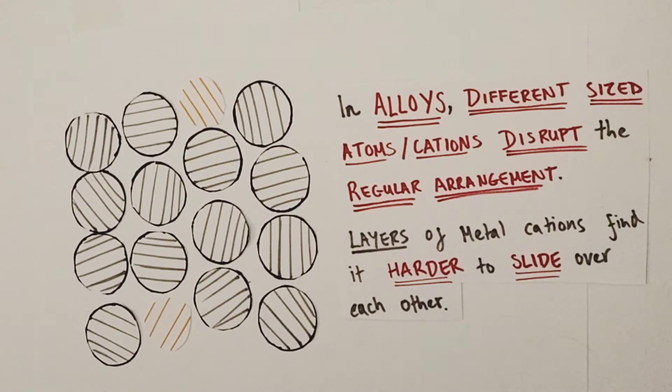This is still disrupting the regular arrangement of those metal cations in the structure, and the layers of metal cations will again find it harder to slide over each other due to that disruptive nature of the different size atoms inside this lattice structure.